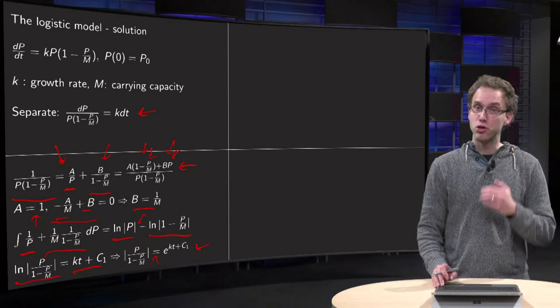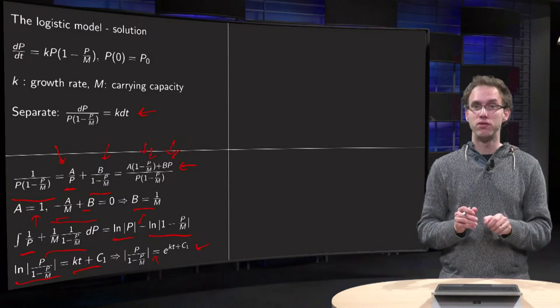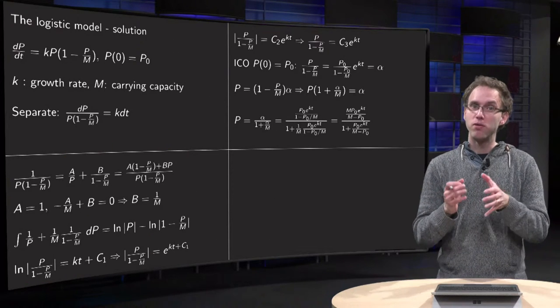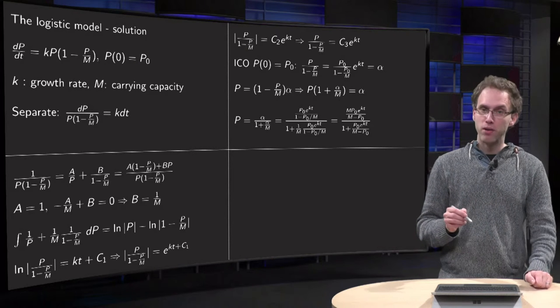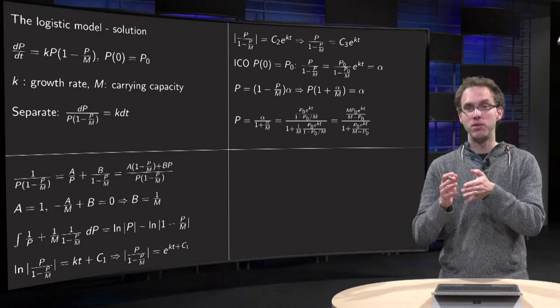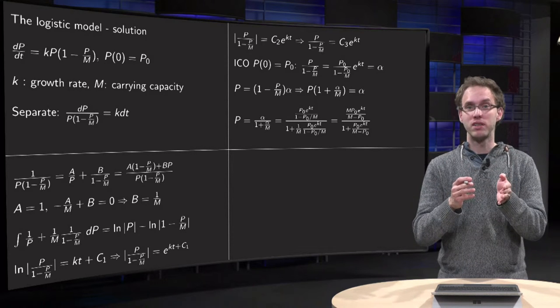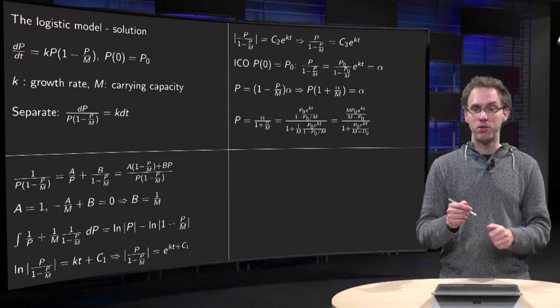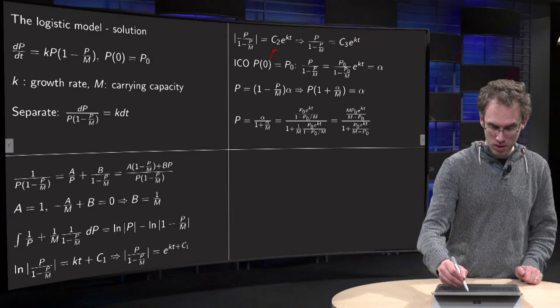And of course we want to solve for P, we want to have P explicitly as a function of t, so now we will try to figure out what P is. Well, first we do the familiar trick: e to the power of kt plus c1 equals e to the power of kt times e to the power of c1, and you will rename e to the power of c1 to c2.